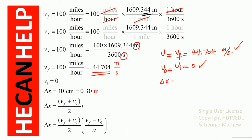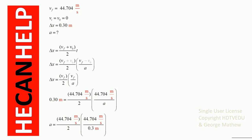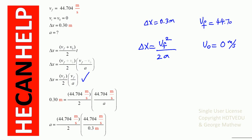So: initial velocity is zero, final velocity is 44.704 meters per second, and delta x is 0.3 meters. The formula to use is Δx equals v_final squared divided by 2a. Do not forget your final velocity is 44.704 meters per second and your initial speed is 0 meters per second — it is starting from rest. Delta x is 0.3 meters.